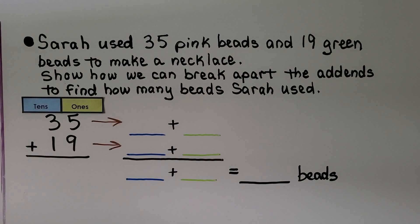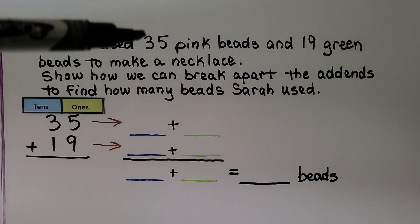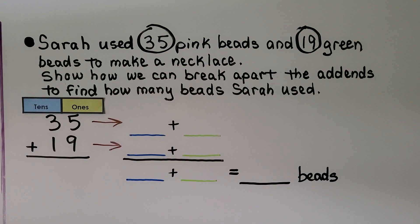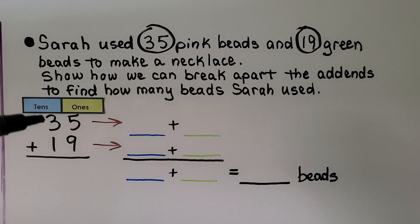Word problem: Sarah used 35 pink beads and 19 green beads to make a necklace. We need to find how many beads Sarah used. We circle the important information: 35 pink and 19 green. We need to add them: 35 plus 19.